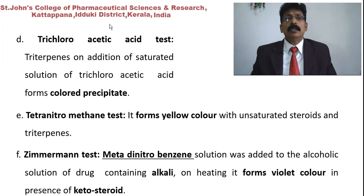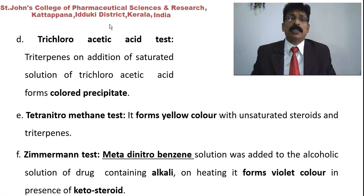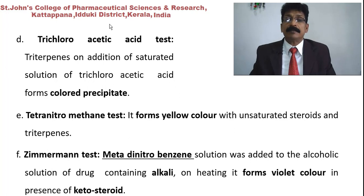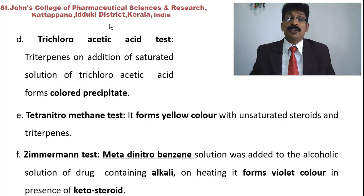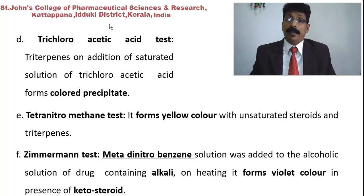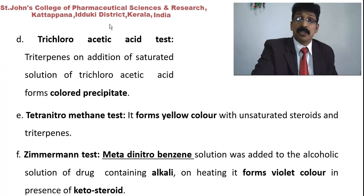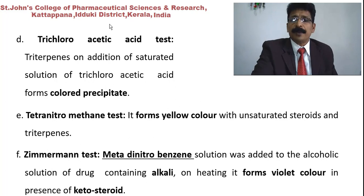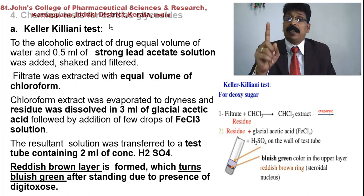Trichloroacetic acid test: triterpenes on addition of saturated trichloroacetic acid solution form a colored precipitate. Tetranitromethane test: forms a yellow color with unsaturated steroids and triterpenes. Zimmermann test: metadinitrobenzene solution is added to an alcoholic solution of the drug containing alkali (e.g., sodium ethoxide or potassium ethoxide); on heating it forms a violet color in the presence of ketosteroids, allowing identification of ketosteroid-containing compounds.